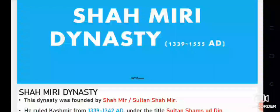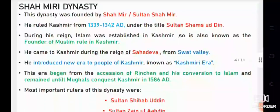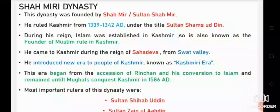The Shahmiri dynasty ruled from 1339 to 1555 AD. The founder of the Shahmiri dynasty was Sultan Shahmeer. When Muslims ruled, they ruled under the title Sultan Shamsuddin. He ruled Kashmir from 1339 to 1342 AD.